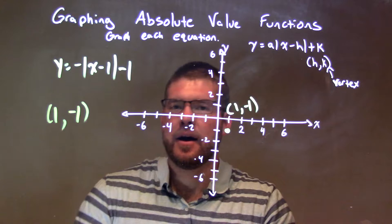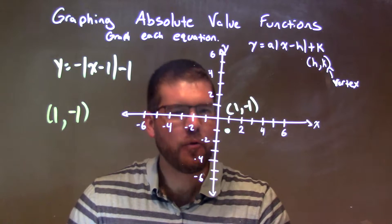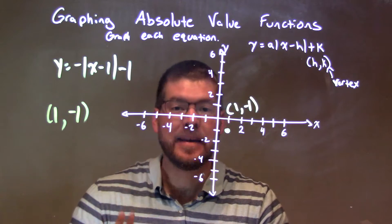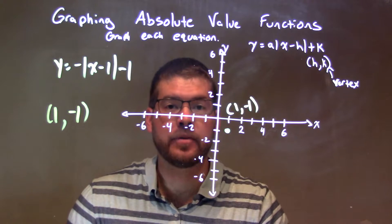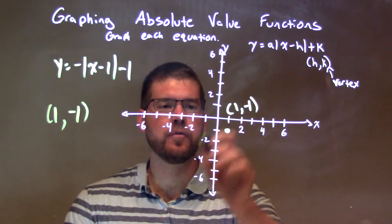All right, a value is negative 1 also. A lot of 1's and negative 1's out here, right? Well, the negative tells us our shape is an upside-down V, or the roof line.